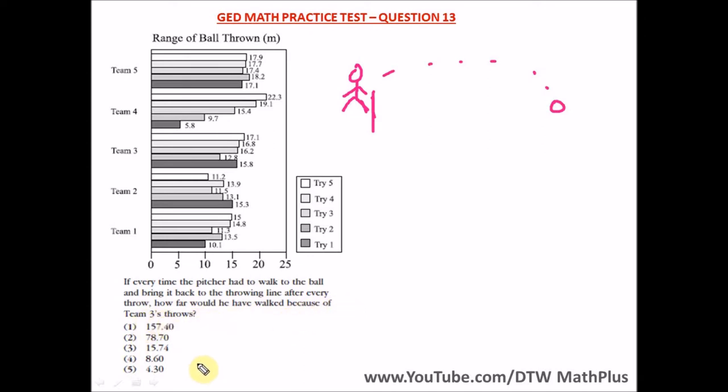So the question now says how far would he have walked because of team three's throws? Let's focus on team three now. For team three, every team had five tries, right? Try one to five.